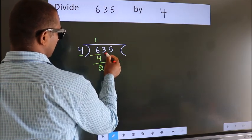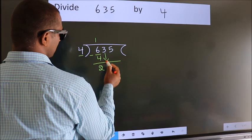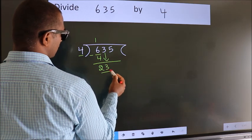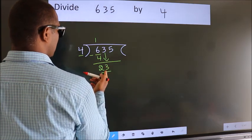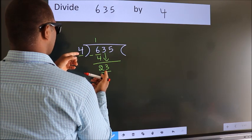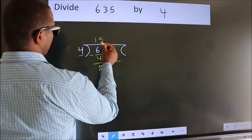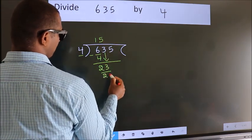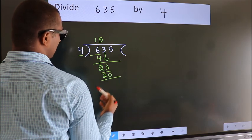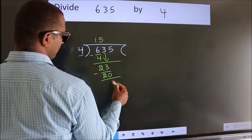After this, bring down the beside number. So, 3 down, making 23. A number close to 23 in the 4 table is 4 fives 20. Now we subtract. We get 3.